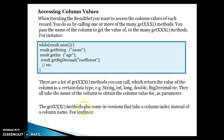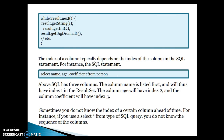The getXxx() methods also come in versions that take a column index instead of a column name. Retrieving a column value by column index is faster than retrieving it by column name. You can pass the column index like 1, 2, 3 — this depends on the SELECT query. The index starts from the leftmost column, which has index 1, then 2, and so on. The index of a column depends on its position in the SQL statement.